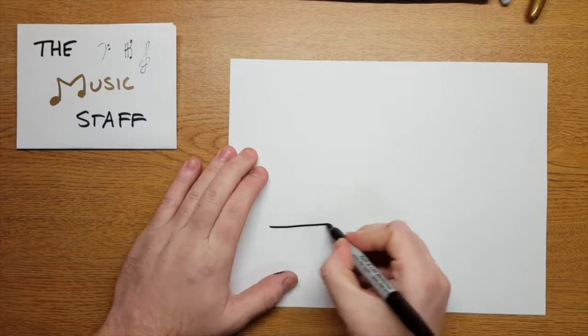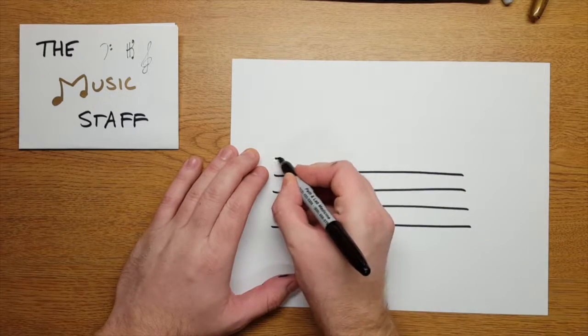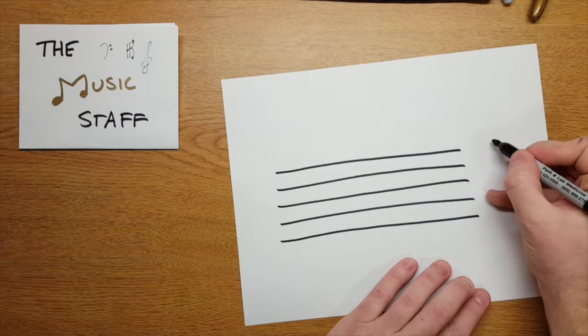First, you have to draw five horizontal lines. You want to try to make them evenly spaced. You can use a straight edge if you want to.